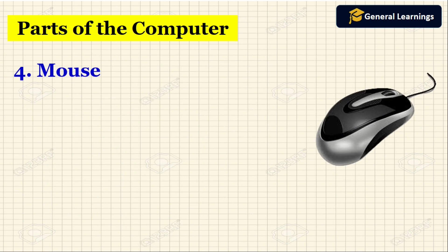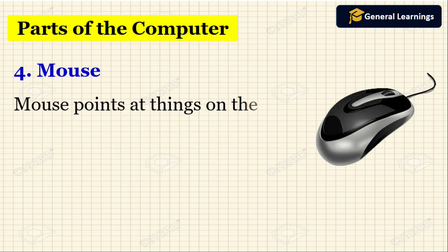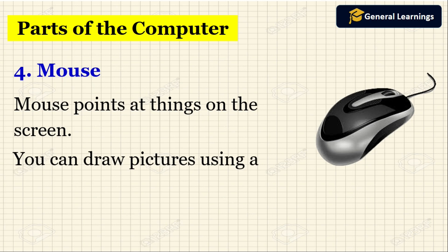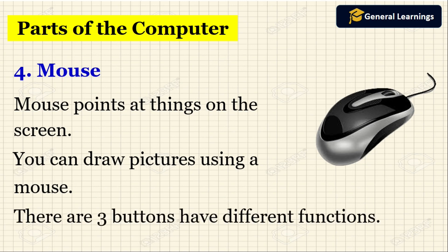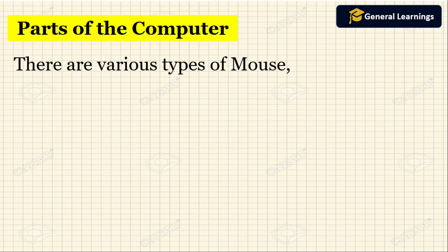The next part we are going to see is the mouse. The mouse points at anything on the screen. If you want to point at anything on the monitor, we use the mouse. You can also draw pictures using a mouse. The mouse has three buttons with different functions: left click, right click, and the center scroll button.